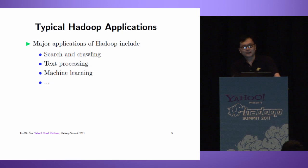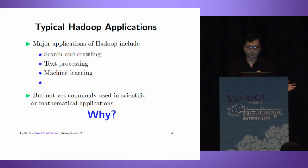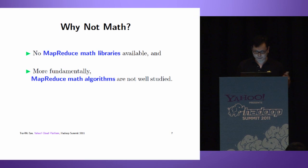Nowadays many companies use Hadoop in production systems for search, text processing, machine learning. However, it's not yet commonly used in scientific or mathematical applications. Why? Two reasons: we don't have a MapReduce Math library, and more fundamentally, many MapReduce Math algorithms are not yet well-studied.